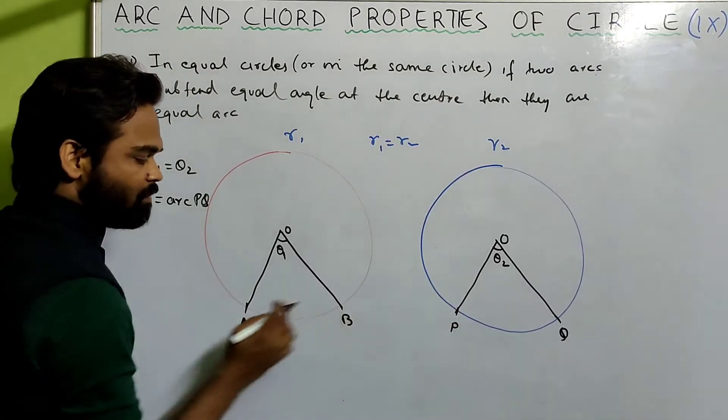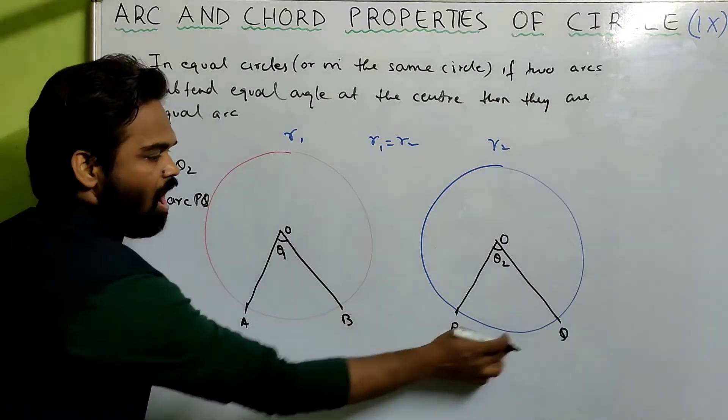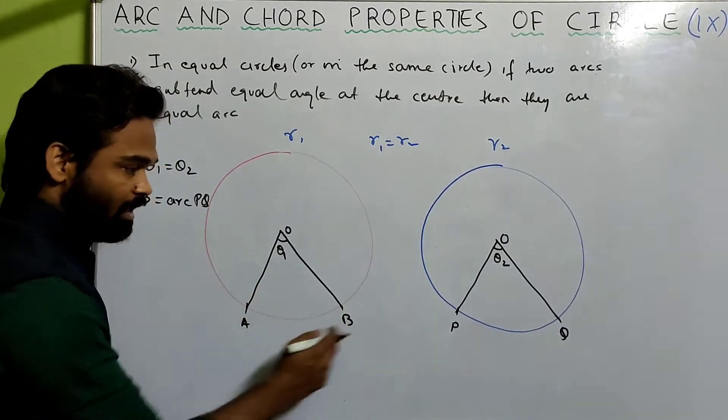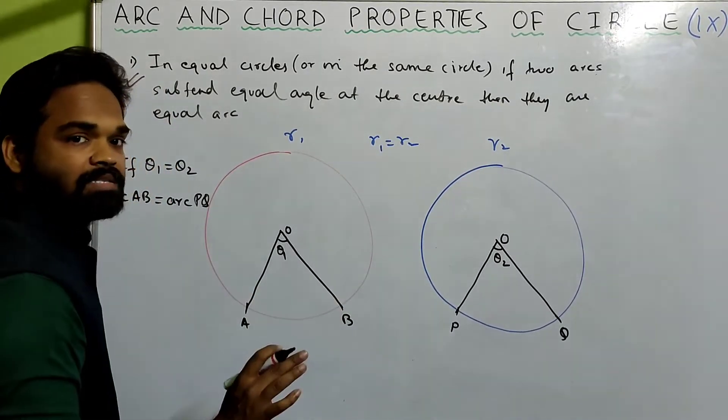If the angle subtended by an arc is the same, then the length of the arc is the same.